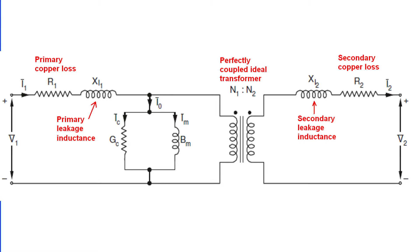This impedance is what opposes the current when the supply is fed to the transformer and causes a voltage drop in the winding.